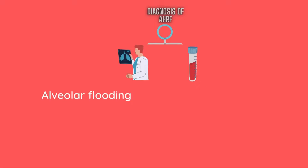On chest X-ray, we look for pathology such as alveolar flooding rather than an intracardiac shunt as the origin of apparent alveolar infiltration. Hypoxemia can occur at the start of an illness before X-ray alterations are visible. On arterial blood gas, the level of partial pressure of oxygen (PaO2) is the standard measure of hypoxemic respiratory failure.